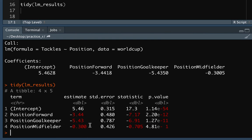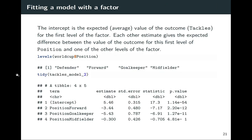The intercept represents the expected average tackles for the reference category — defenders. Each other coefficient is the expected difference from that reference. Midfielders have very close to the same number of tackles as defenders, though slightly less. Forwards and goalkeepers both have quite a lot fewer tackles on average compared to defenders. The p-values test whether the difference between each position and the defender reference is zero. For example, the expected average tackles for forwards is 5.46 minus 3.44.